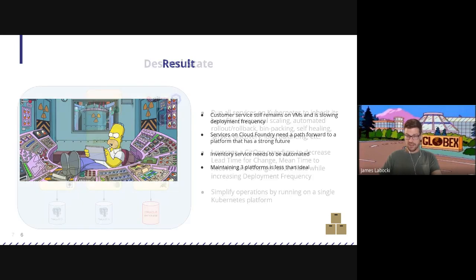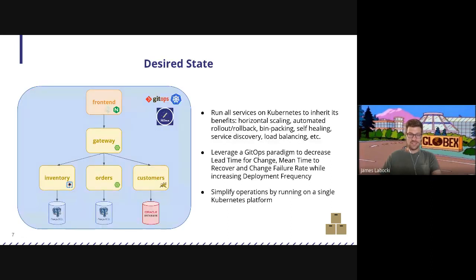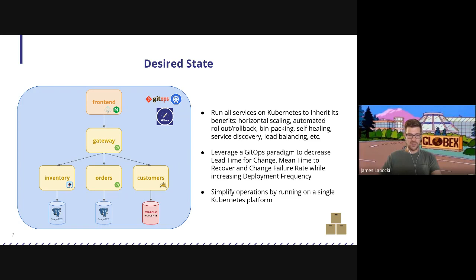I've invited the conveyor team here because ultimately what I want to get to is this: I want all of my services running on Kubernetes so that I get the benefits — horizontal scaling, automated rollout and rollback, and all those great things that Kubernetes gives me. I want to leverage a GitOps model to decrease my lead time for change, mean time to recover, and change failure rate, and increase my deployment frequency. I want to simplify my operations by putting all of this on a single platform that's easier to manage for my ops teams. Then I can start to plug in cloud services and do even more fancy cloud-native things in the future.